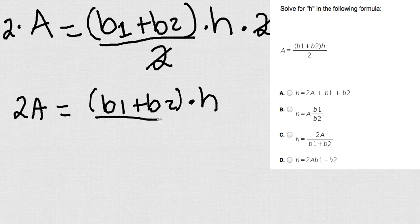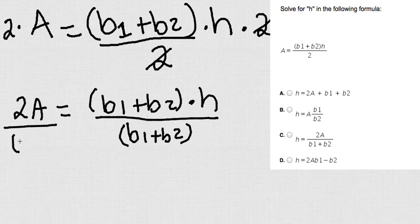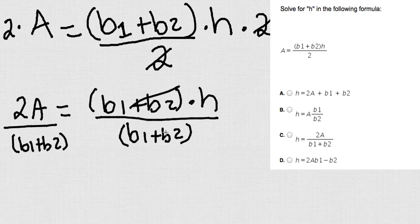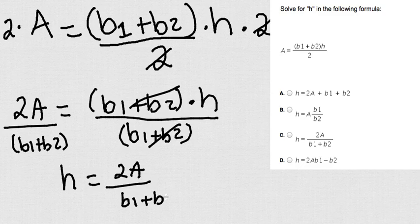what I'm going to do, I'm going to divide B1 plus B2, just like that, just like a factor, B1 plus B2. And look what's going to happen. This is going to eliminate with this. Finally, my answer is going to be H equals 2A over B1 plus B2.